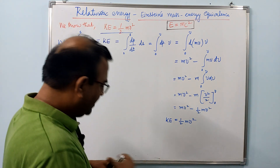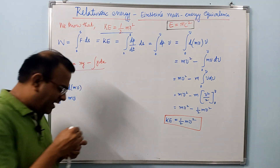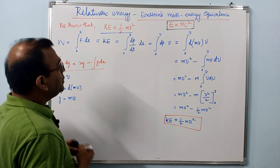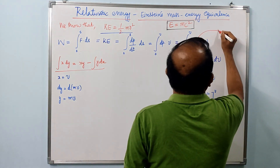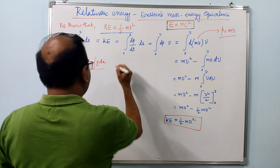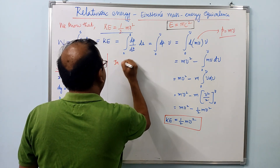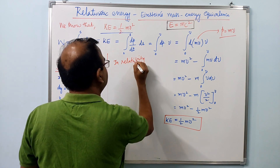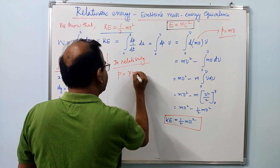Now in special relativity, this classical expression for kinetic energy cannot be valid, because in special relativity our expression for momentum p = mv is no longer valid. In relativity, p is equal to gamma times mv, where gamma is the Lorentz factor.